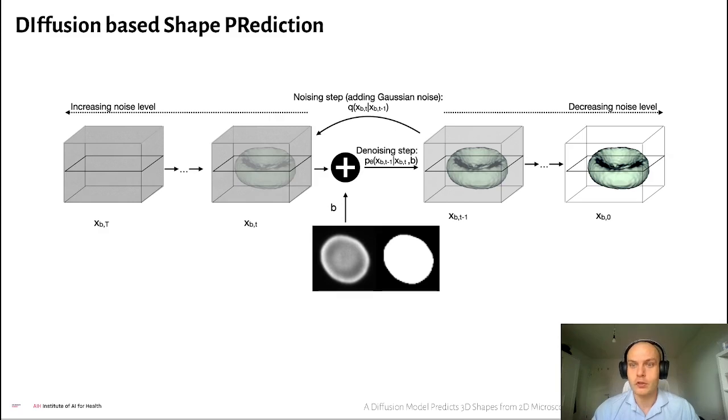Yet morphological features have proven to be valuable. Moreover, state-of-the-art methods produce a single deterministic image as a prediction. Diffusion models have shown amazing results in image generation, and this has inspired us to apply diffusion models to the reconstruction of cell shapes from confocal microscopy slices.